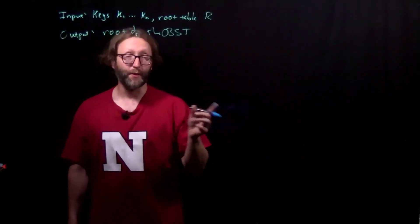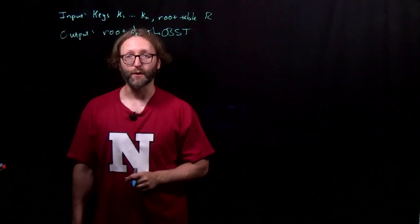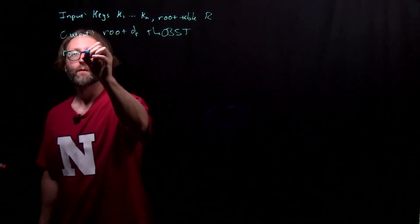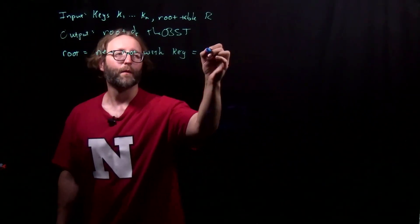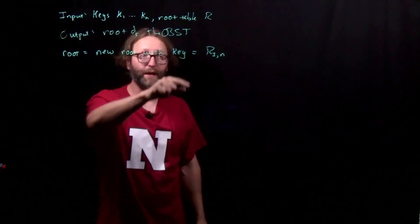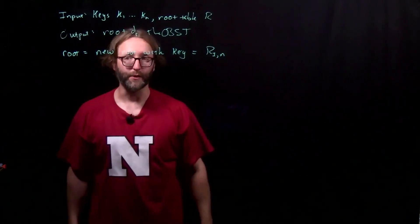So given the keys and the root table, we'll output the root of the optimal binary search tree, having built all of its children. We'll build a new root node, with the key value corresponding to the root tables, 1 and entry.